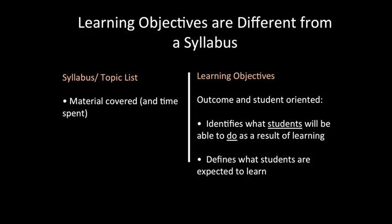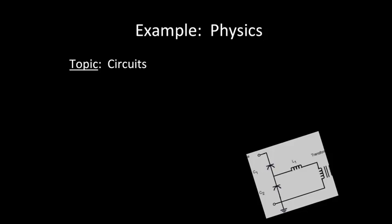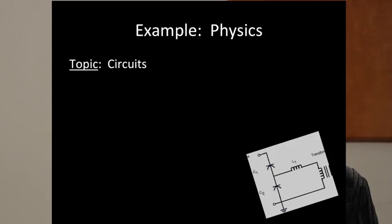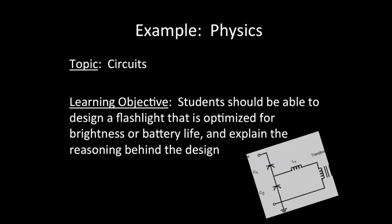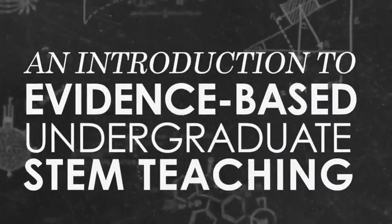If you were to measure only teaching goals, you could deliver a lecture really well, but it doesn't mean the students learned anything. So for example, in physics you might see the topic 'circuits' listed on the syllabus, but a learning goal associated with that would be much more illuminating — it would say something like: students will be able to design a flashlight that is optimized for brightness or battery life and explain the reasoning behind their design.